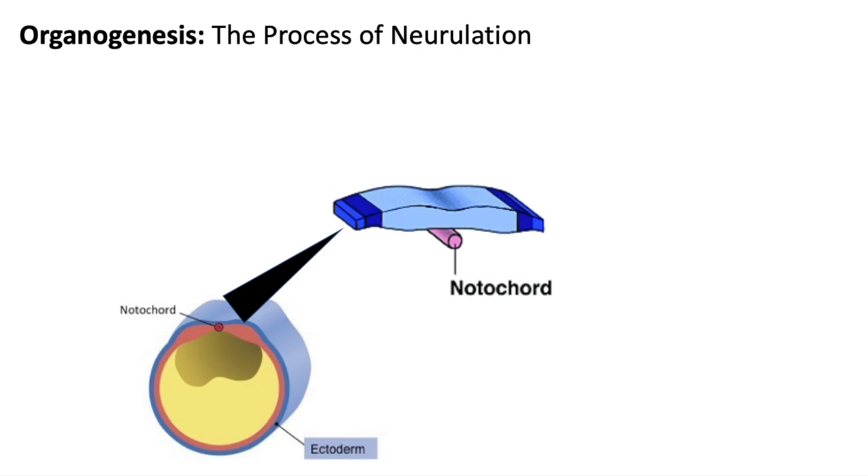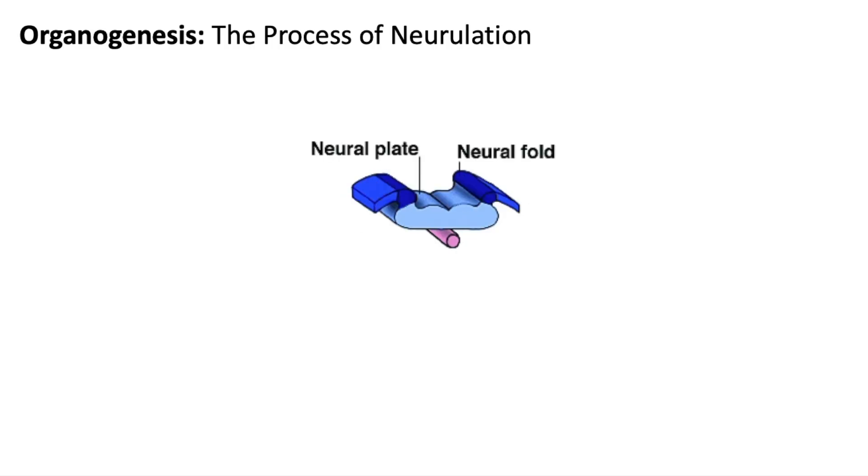An example of organogenesis is the process of neurulation. This begins as cells from the mesoderm form the notochord, a rod that extends along the dorsal side of the chordate embryo. Signaling molecules secreted by these mesodermal cells cause the ectoderm above the notochord to become the neural plate. This is an inductive interaction as a group of cells influences the development of another group of cells through a close range interaction.